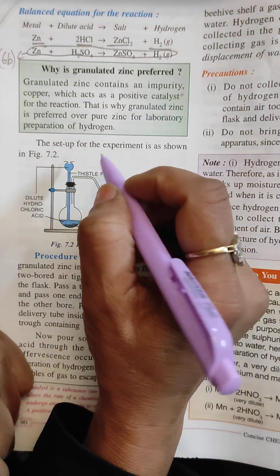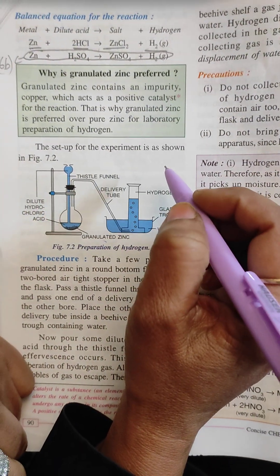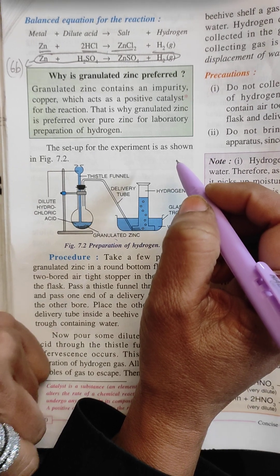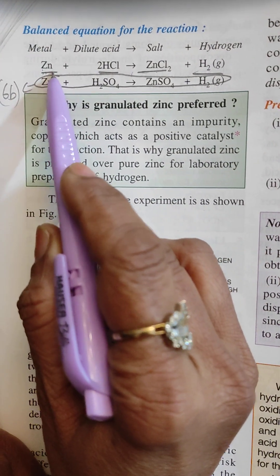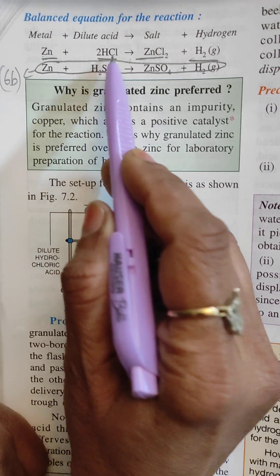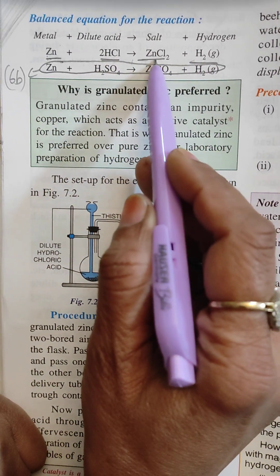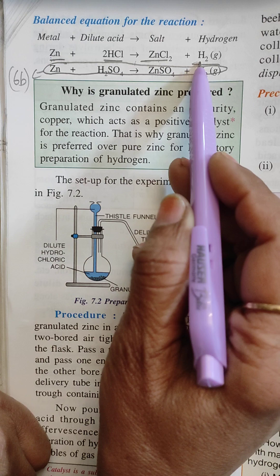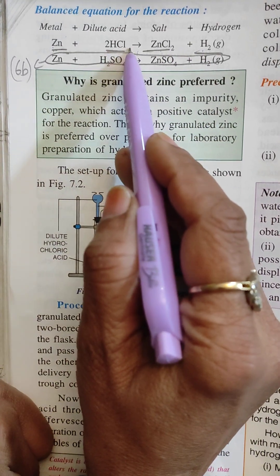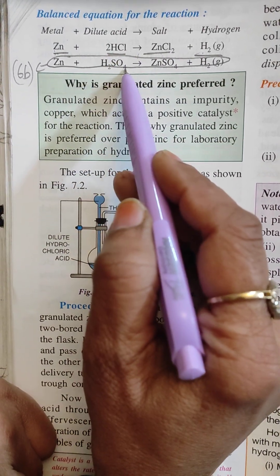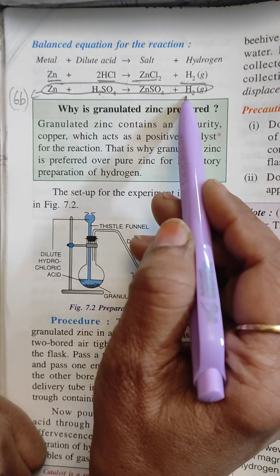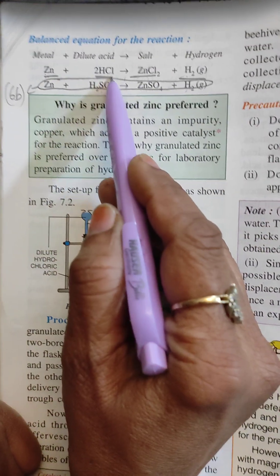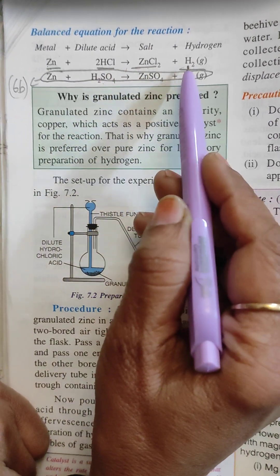Let's start doing laboratory preparation of hydrogen gas. First of all we need to know what are the requirements. We require zinc plus hydrochloric acid to get salt and hydrogen, which is zinc chloride and hydrogen gas. Either we can use hydrochloric acid or we can use sulfuric acid H2SO4. Zinc plus sulfuric acid equals zinc sulfate plus hydrogen, or zinc plus hydrochloric acid equals zinc chloride plus hydrogen.